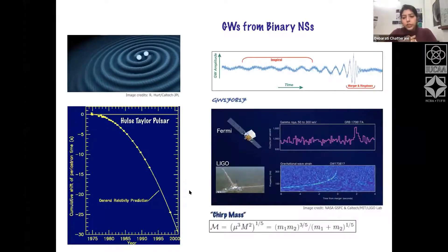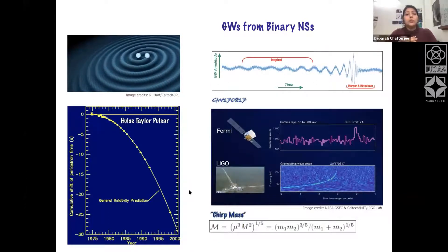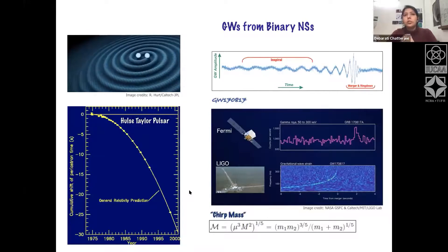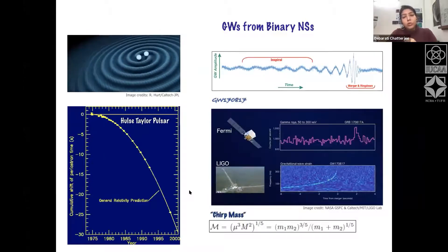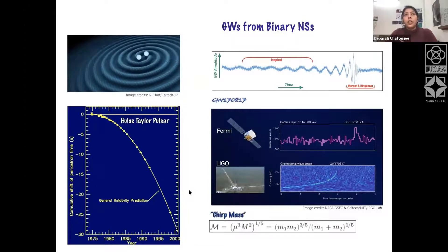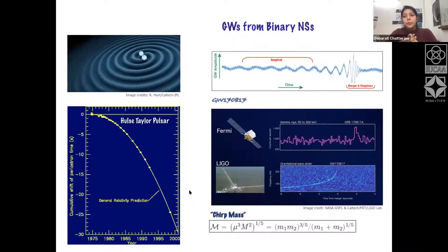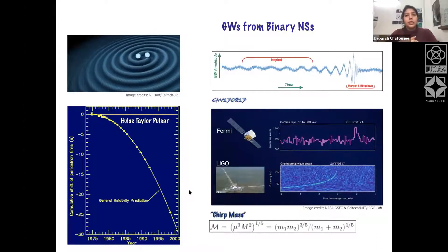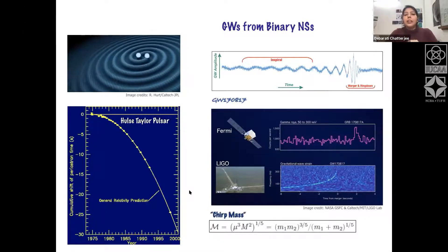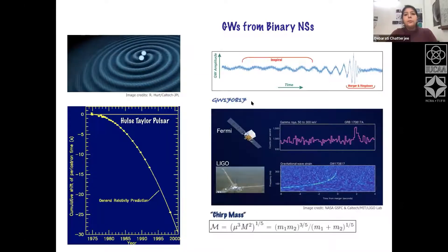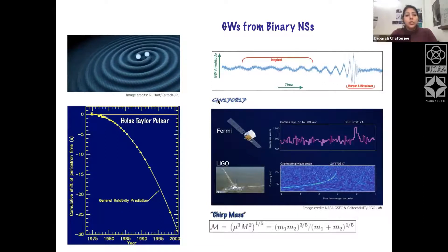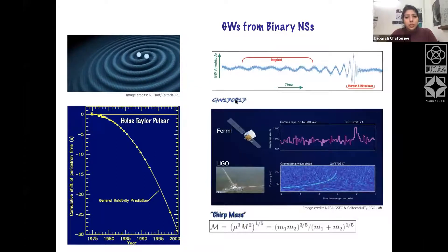From Einstein's prediction until today, there was great hope in observing gravitational waves. The challenge is they are extremely tiny — with amplitude of about 10 to the minus 22 — an extraordinary technological challenge. Finally, the first gravitational waves from binary neutron stars were observed in 2017, called GW170817 because it was observed on the 17th of August.